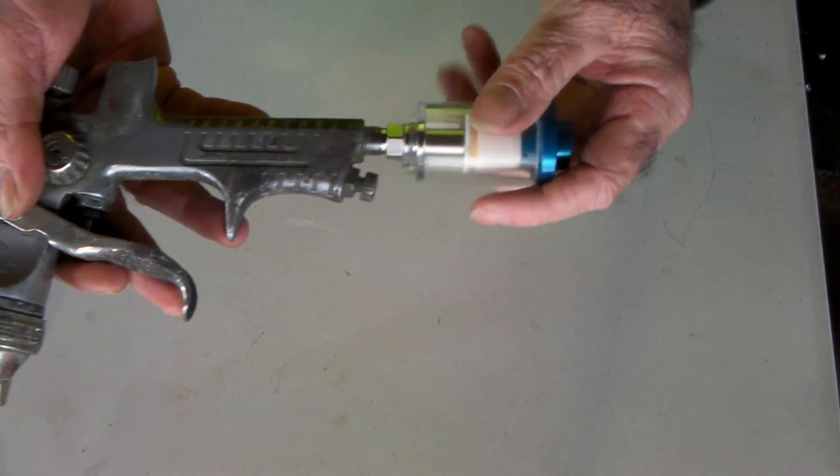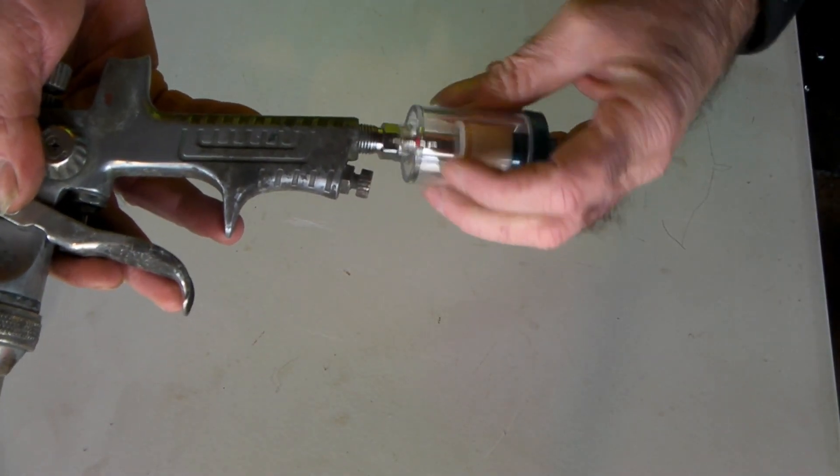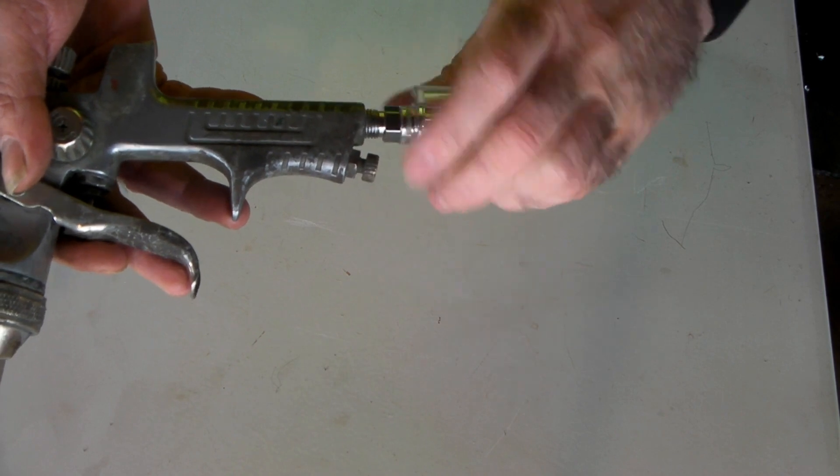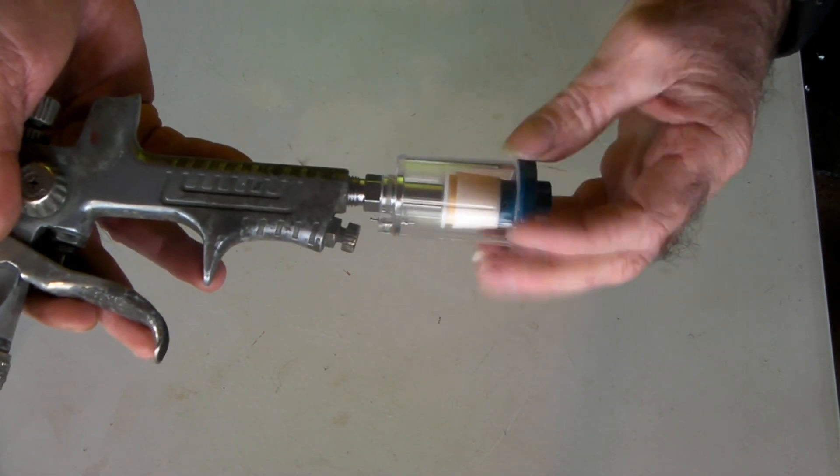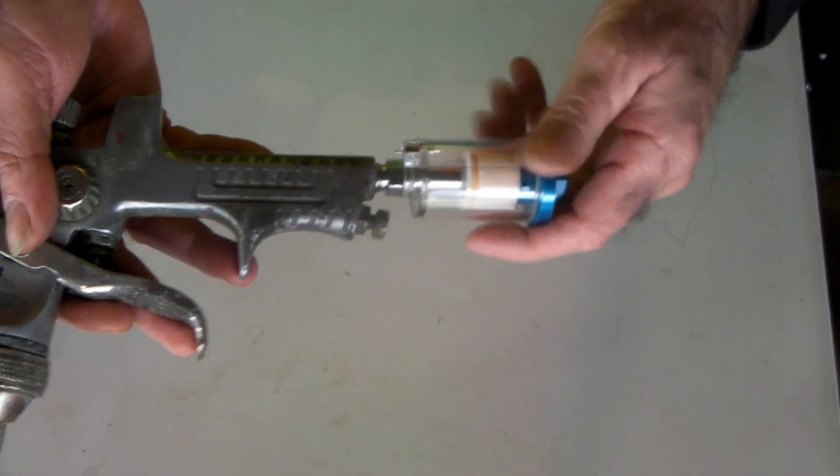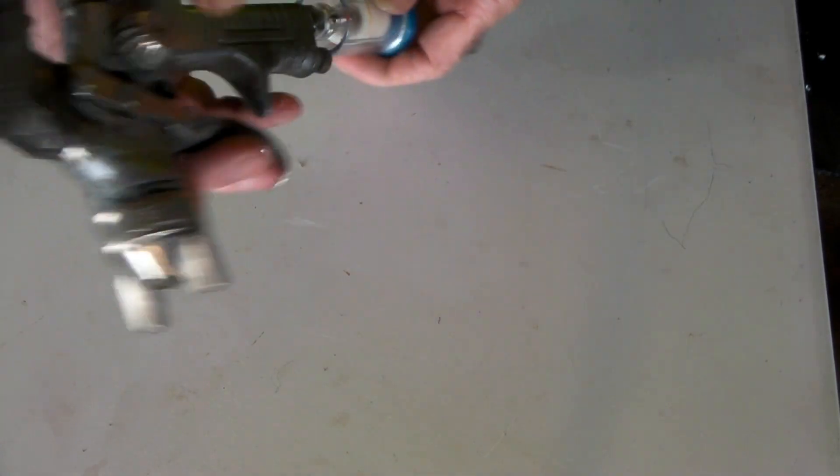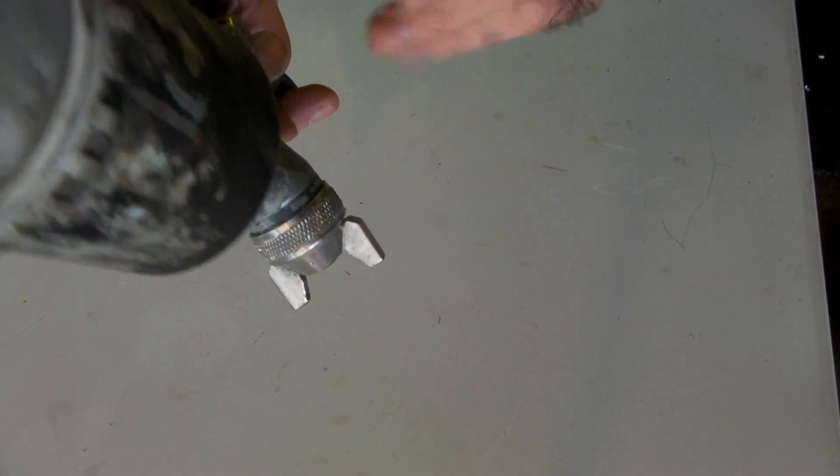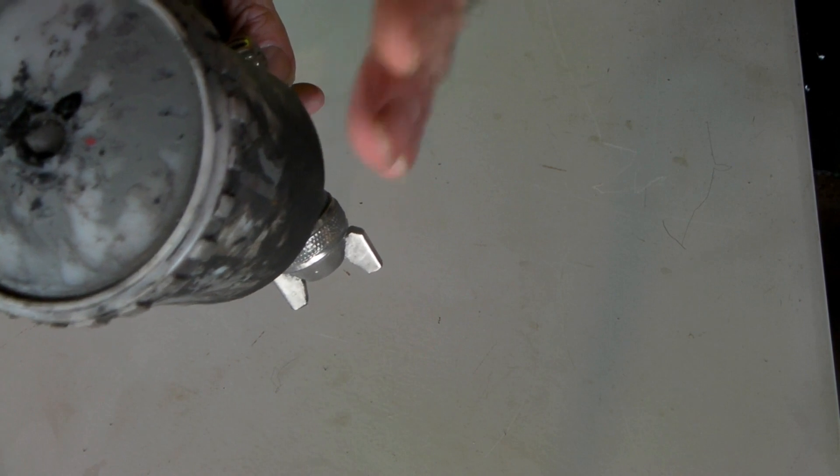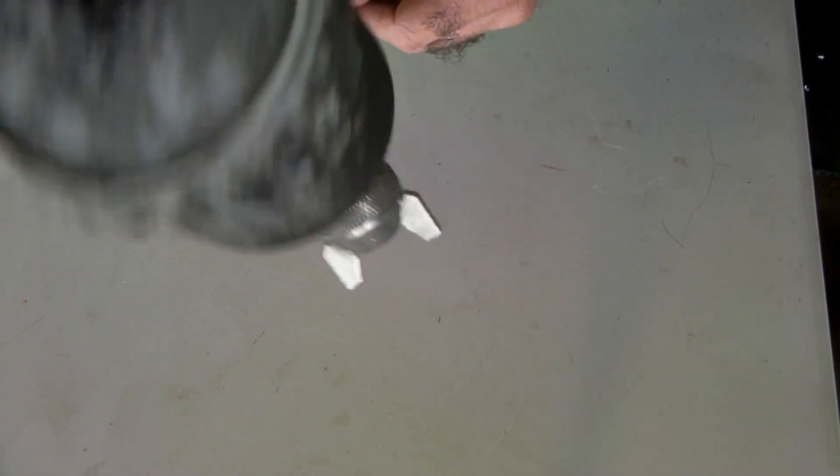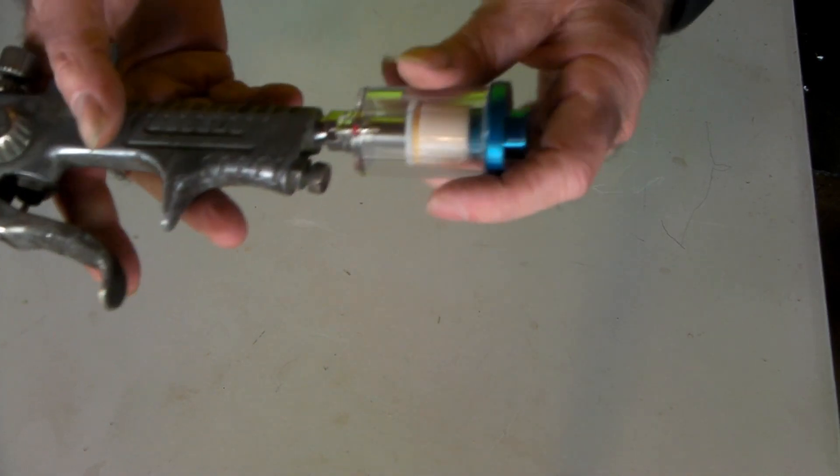What I ended up doing was just buying one of these little inline filters. They're cheap, about 10 bucks or something stupid. They screw into your gun like so, and then your air goes in there. So you've not only got the one from the compressor, you've also got one at your gun. I found it eliminated probably, I don't know, 80% of the problem.